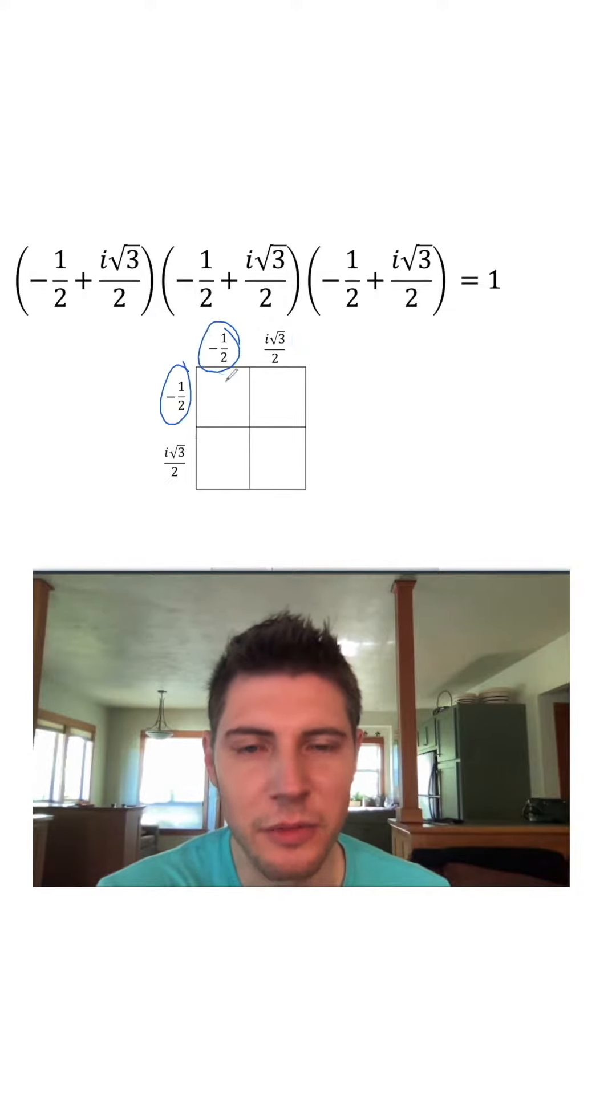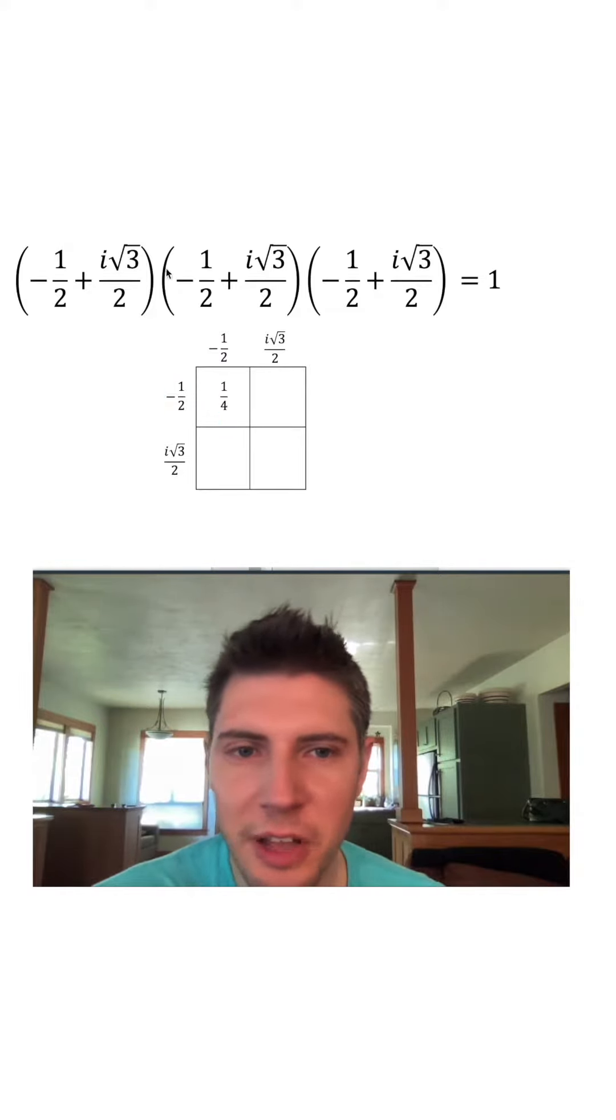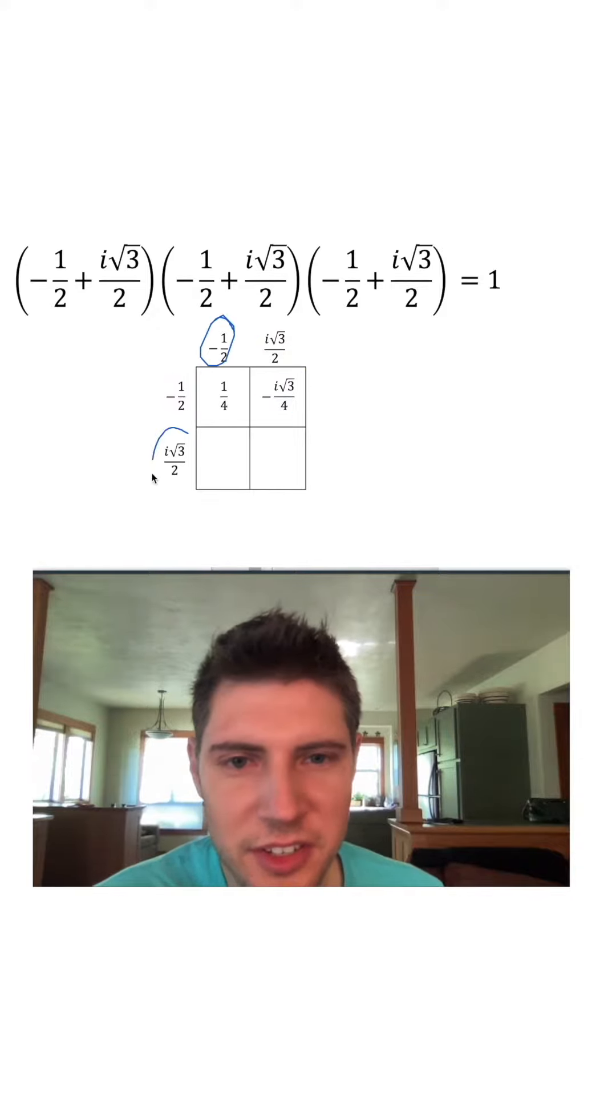So negative one-half times negative one-half, that's positive one-fourth. And when we multiply this by this, we introduce a negative. Since it's one-half, it's going to have a four on bottom and then the i root three on top. This times this is the same thing. We have a negative and then the i root three on top and two times two is four on bottom.